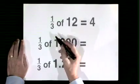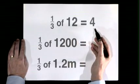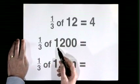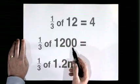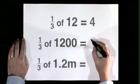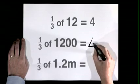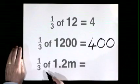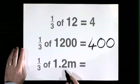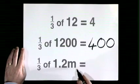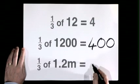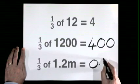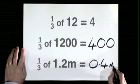One third of twelve is four. One third of twelve hundred is four hundred. One third of one point two metres is zero point four metres.